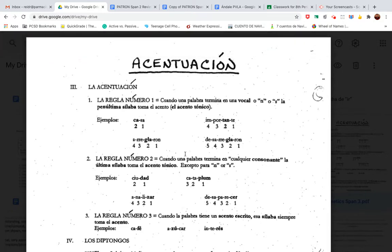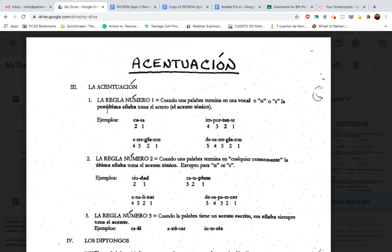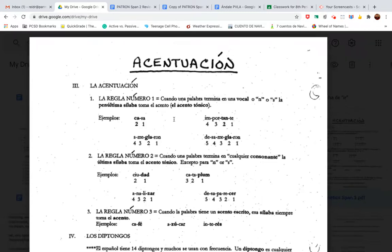But you are going to translate this. Cuando una palabra termina en una vocal o n o s, la penultima sílaba toma el acento, el acento tonico. What does this rule mean in English? You're going to type it on a Google Doc. And you're going to write it out in English. Not Google Translate. Try to figure it out without using Google Translate. Spanishdict.com.